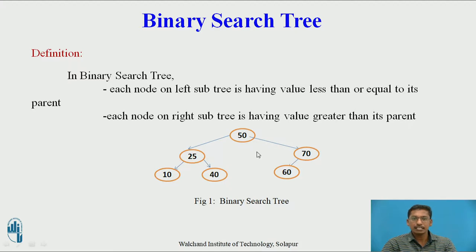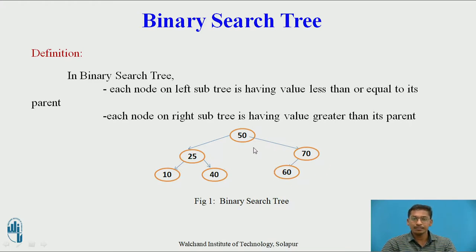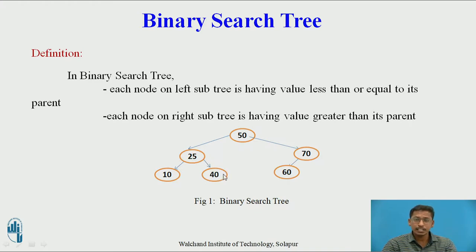An example of binary search tree is given here. 50 is the first node — we call it the root. All the nodes appearing on the left hand side of 50 are having values less than 50, and all the nodes on the right hand side are having values greater than 50. The same property applies for each node. For example, taking 25 as a node: 10 is less than 25, so 10 appears on the left hand side of 25. 40 is greater than 25, so 40 is present on the right subtree of 25.